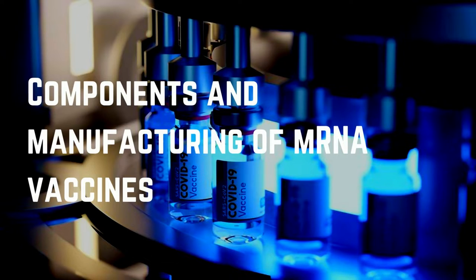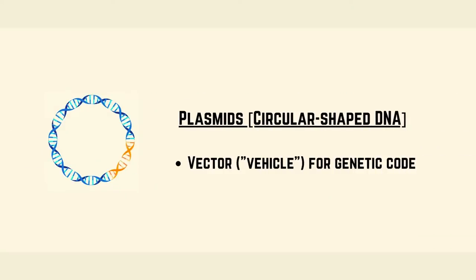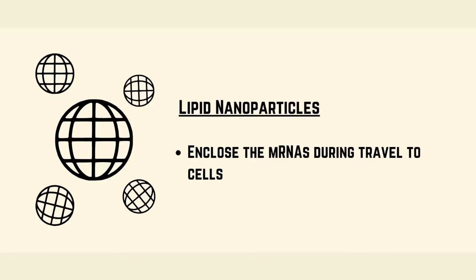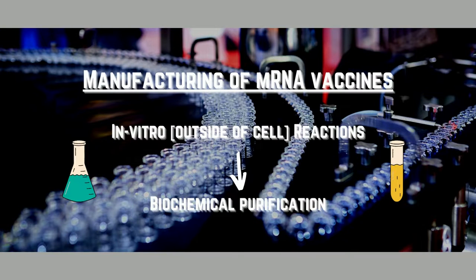mRNA vaccines consist of three main components: the mRNA itself, which contains the genetic code and acts as a template for coding; a plasmid, which is a vector to transfer the genetic code; and lipid nanoparticles, which encase the mRNA. Additional components include salts and sugars — for example sodium chloride and sucrose — which act as buffers and stabilizers in the vaccine solution to ensure the nanoparticles remain separate.